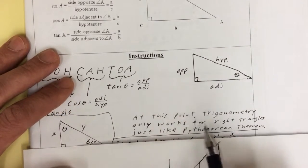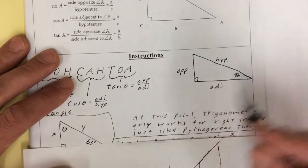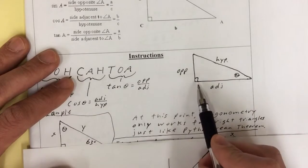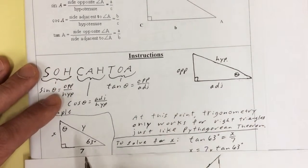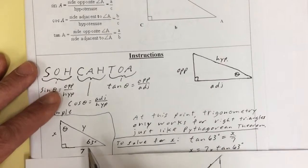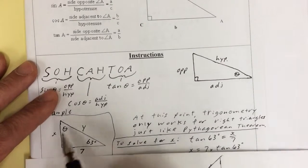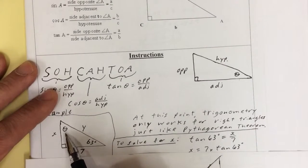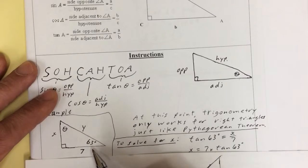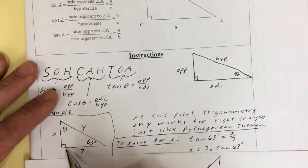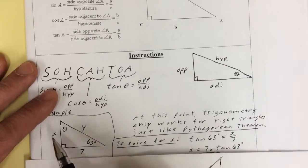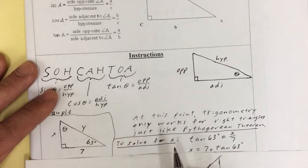Keep in mind that trigonometry at this point only works for right triangles. If there's not a right angle in there, this doesn't work. So, let's look at this triangle. I've labeled this angle theta, and I'm given this angle as 63 degrees and this one as 90 degrees — that's the right angle. This side is 7. We want to find x, y, and theta.